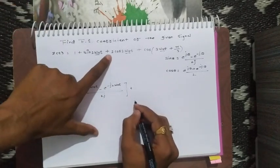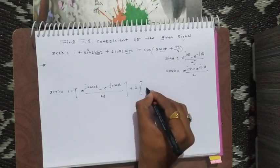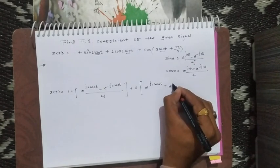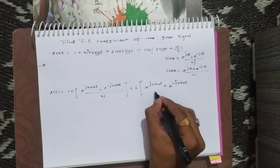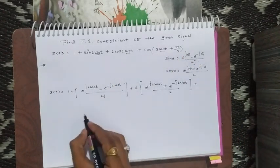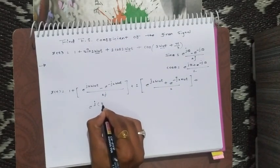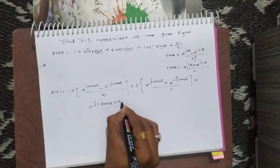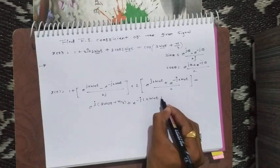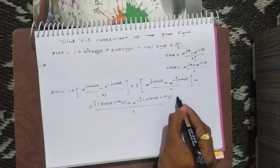For the cosine representation, we use e raised to j theta plus e raised to minus j theta, divided by 2. Now I can write x(t) as 1 plus the sine term written as e raised to j 2 omega naught t minus e raised to minus j 2 omega naught t, divided by 2j, plus for cosine: e raised to j 2 omega naught t plus e raised to minus j 2 omega naught t, divided by 2, plus the cosine of theta term written as e raised to j(3 omega naught t plus pi by 3) plus e raised to minus j(3 omega naught t plus pi by 3), divided by 2.